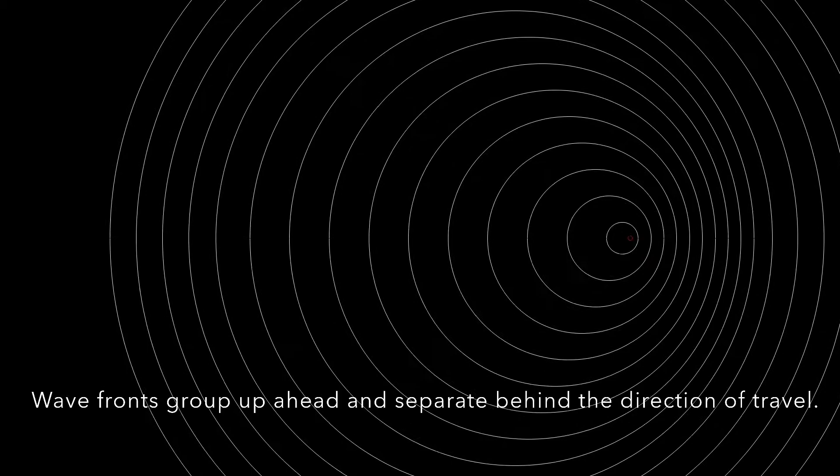sound waves and their wave fronts, represented by circles, start to group up ahead of the direction of travel and separate behind the direction of travel. At transonic speeds, meaning speeds very close to the speed of sound,